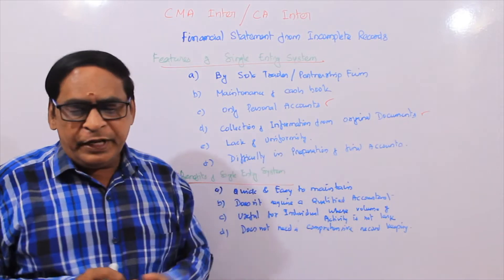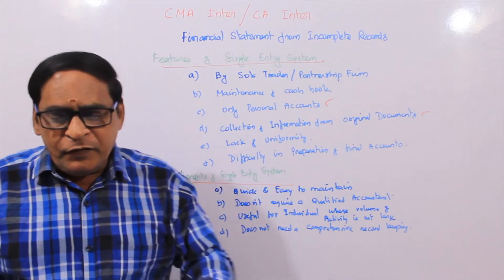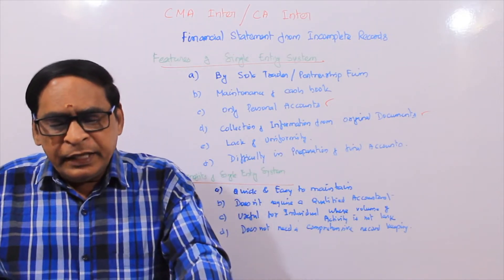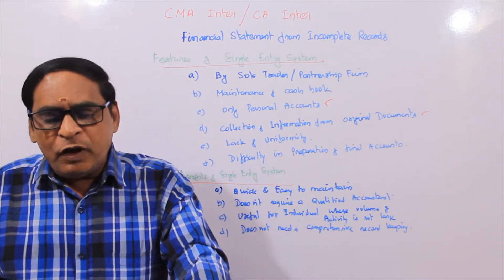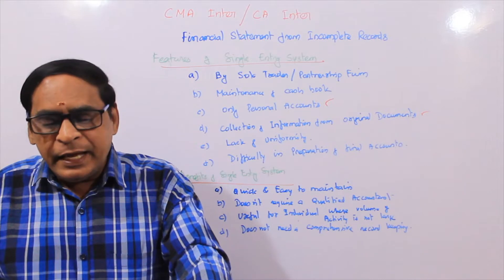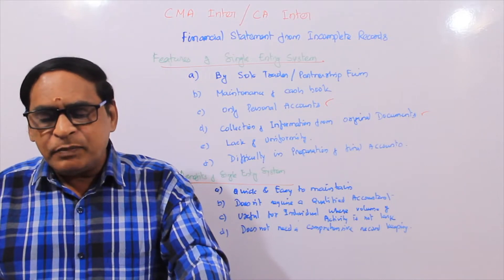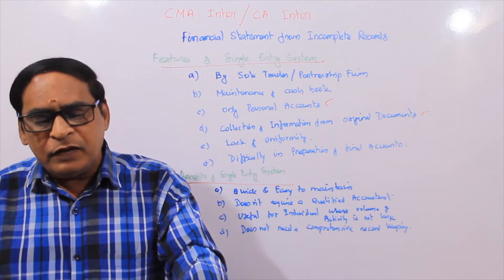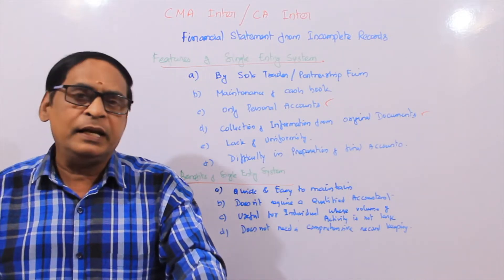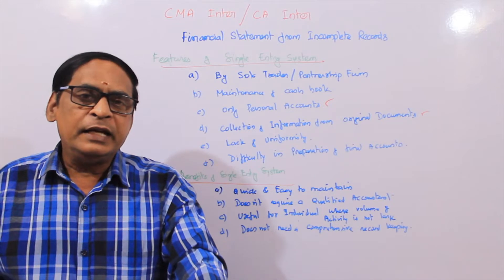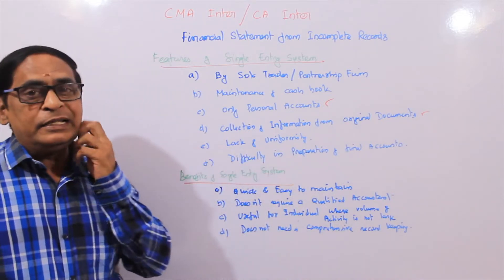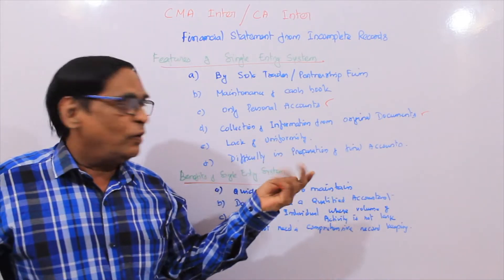Lack of uniformity — it lacks uniformity as it is a mere adjustment of double entry system according to the convenience of the person. Double entry system maintains uniformity, but single entry system does not.